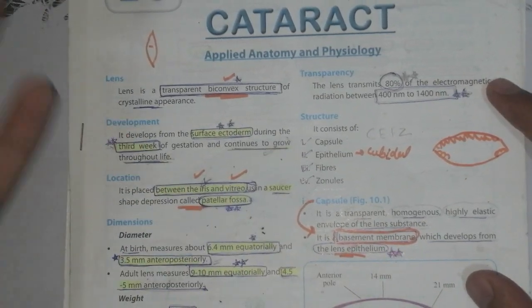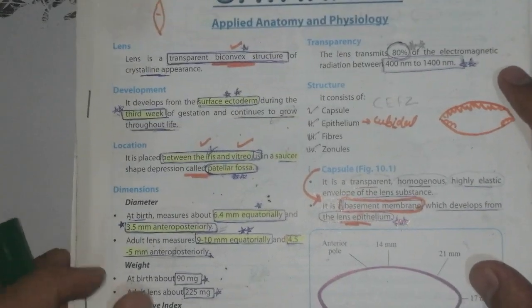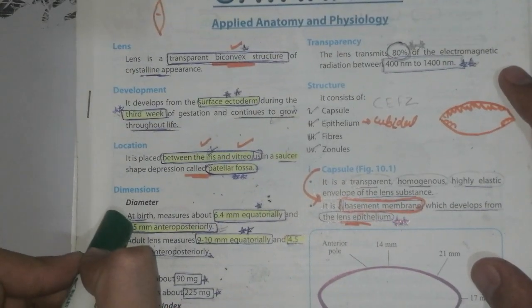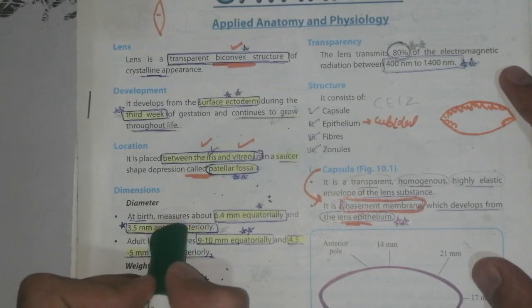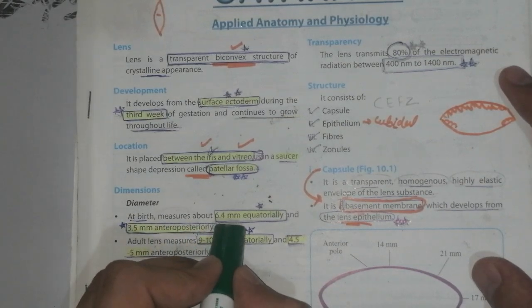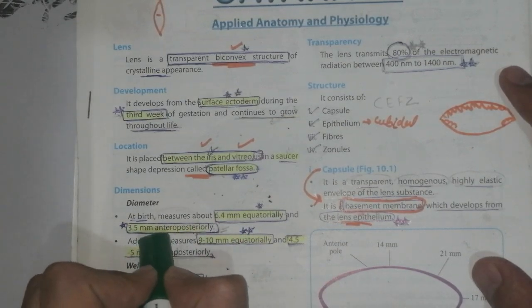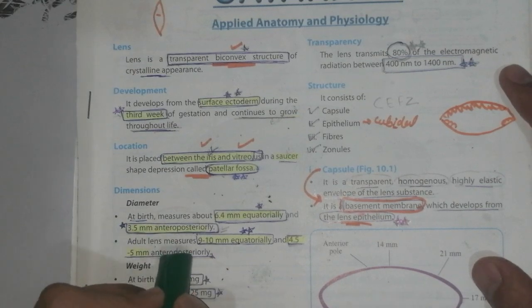What is the diameter? Diameter at birth measures 6.4mm equatorially and 3.5mm anterior-posteriorly.